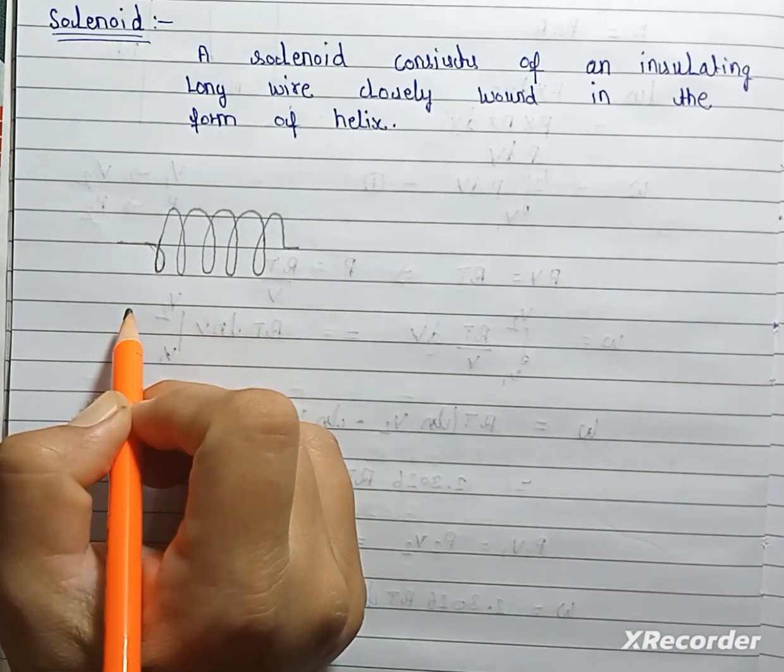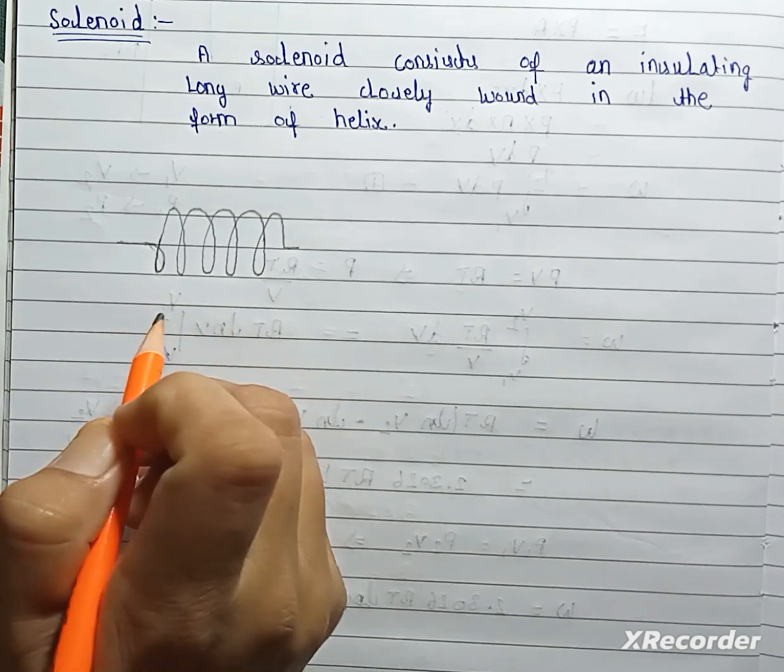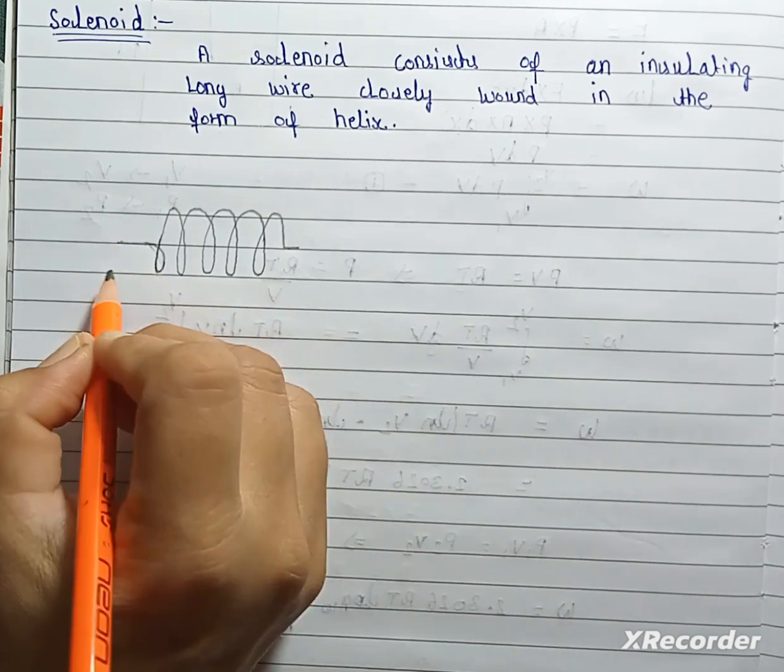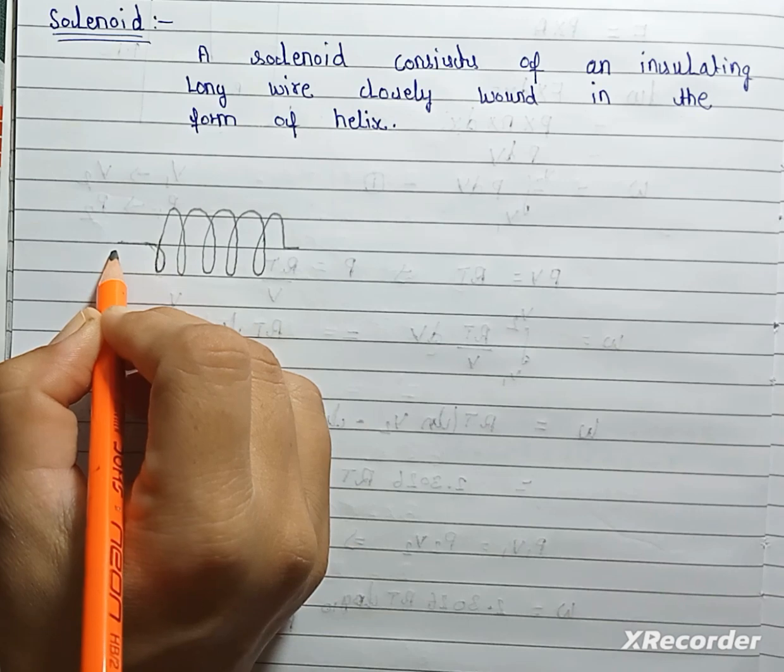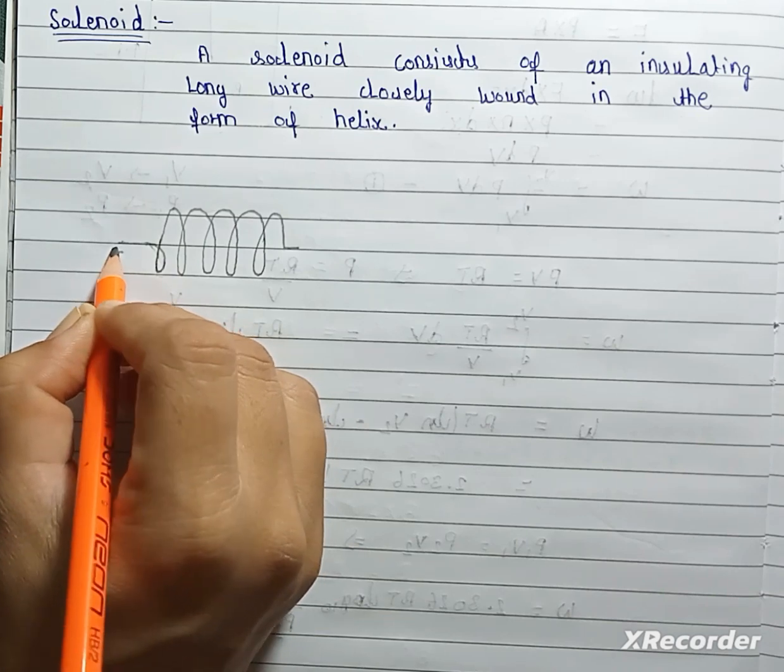Now, here we will calculate the magnetic field due to solenoid. Here current I flows in this direction.